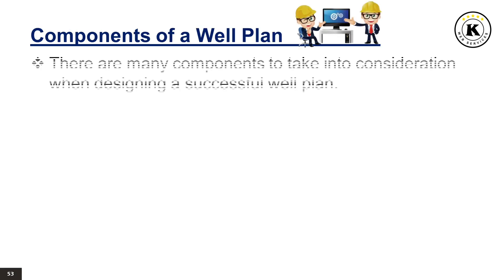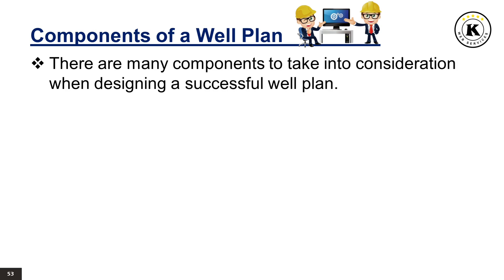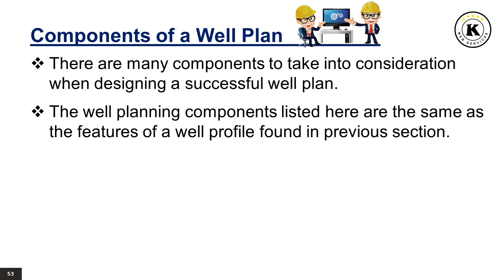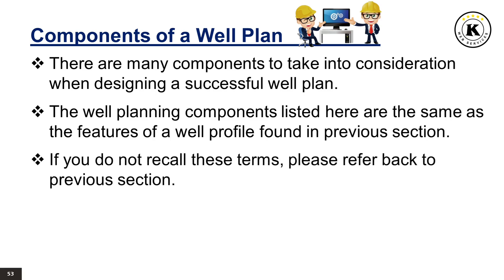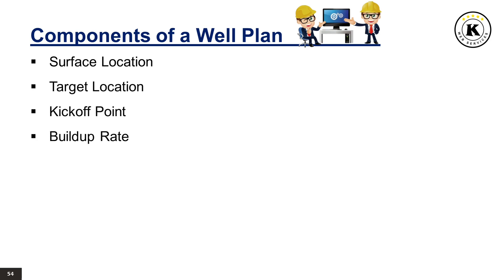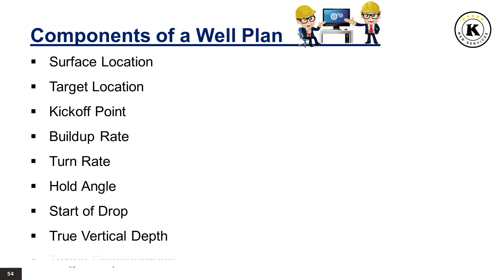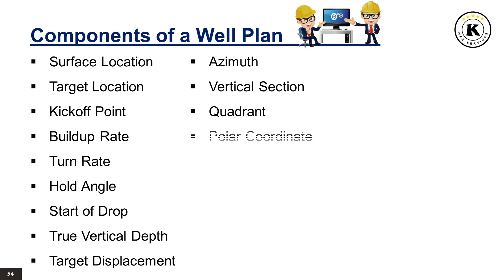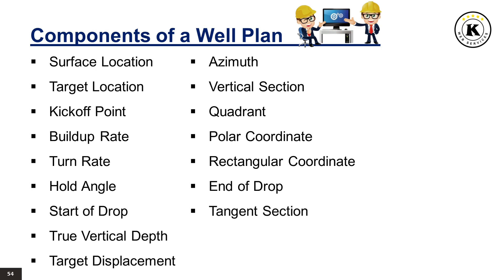Components of a Well Plan: There are many components to take into consideration when designing a successful well plan. The well planning components listed here are the same as the features of a well profile found in the previous section. The well plan components are: surface location, target location, kickoff point, build-up rate, turn rate, hold angle, start of drop, true vertical depth, target displacement, azimuth, vertical section, quadrant, polar coordinate, rectangular coordinate, end of drop, tangent section, and measured depth.